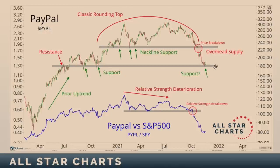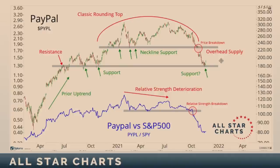Once we broke, the next logical level was all that support from last year — when overhead supply turned into support, more demand than supply at those levels, sure enough it happened again. If you like trading range-bound markets, above 180 you can own it — you have a top near 225, and you're trading this range-bound market. Just know what you're doing — you're not trading in a trending environment. The trend here is down, sideways at best. Good lessons here: relative strength breaking down before price breaks, supply and demand dynamics, support and resistance.